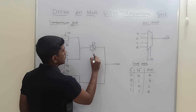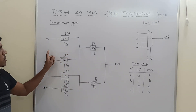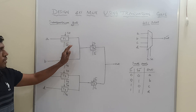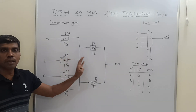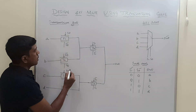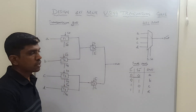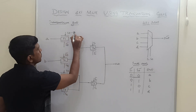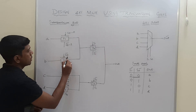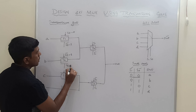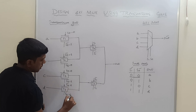This is the simple structure of a 4x1 multiplexer using transmission gates. I will now substitute the selection values and find the response of the circuit step by step. First case: S1 value is 0, S0 value is 0. So S0 equals 0, and S0 bar, the complement, equals 1.